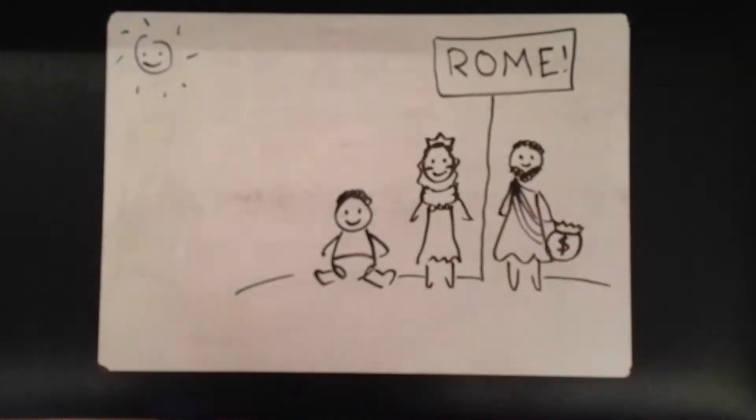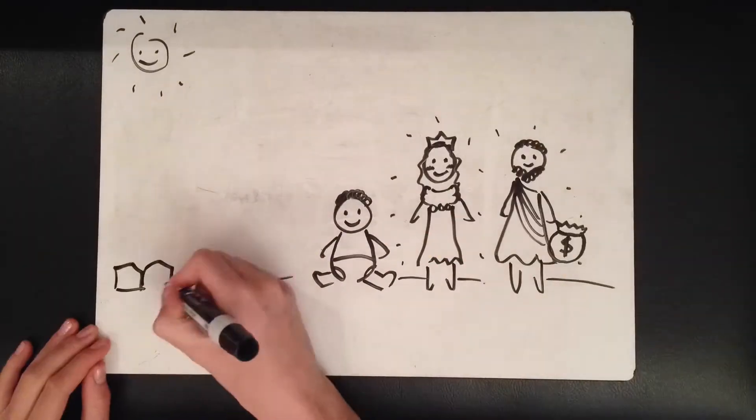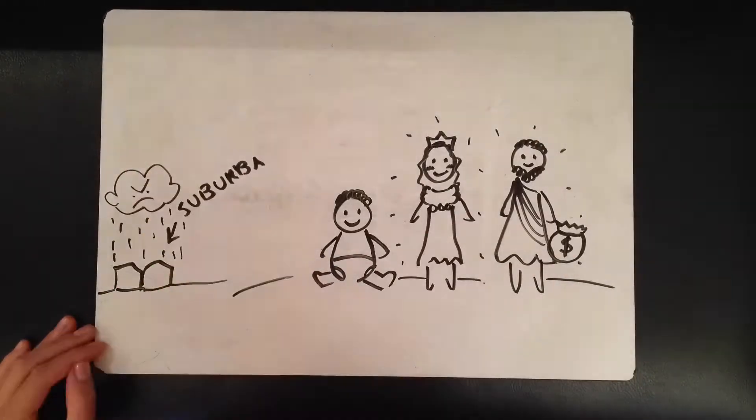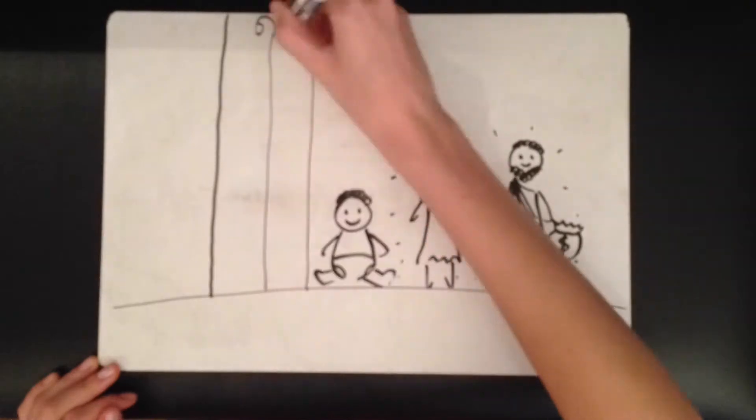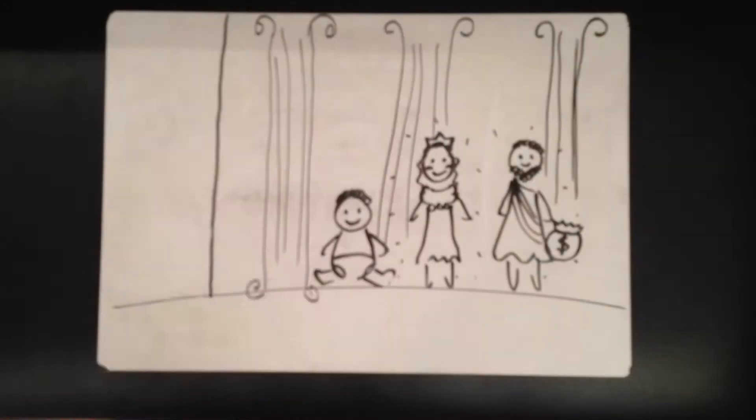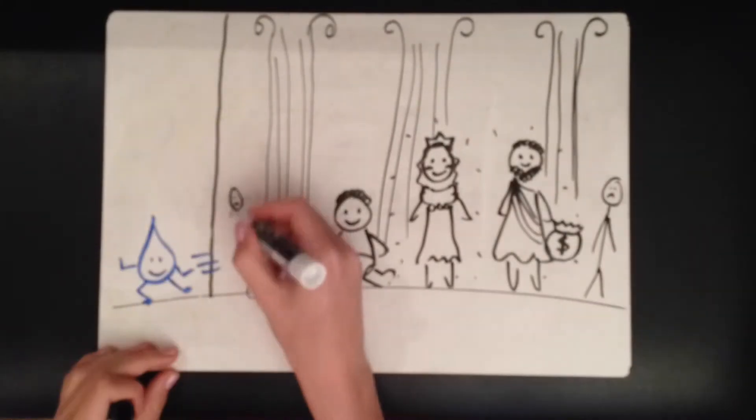His parents are wealthy citizens living in the lavish neighborhoods away from the crowded and dirty suburbia. His house is large and comfortable, with running water and many slaves to attend to his and his family's needs.